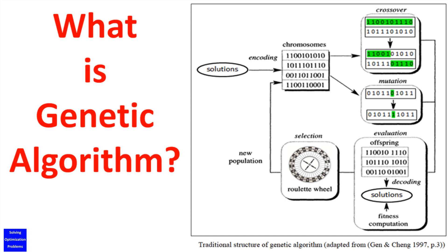Here is a general structure of a genetic algorithm. Genetic algorithm is a popular meta-heuristic, or stochastic optimization algorithm, based on the mechanisms of natural selection in Charles Darwin's theory of natural evolution. Genetic algorithm was first introduced by Holland in 1975, and now it is still very popular in various research communities. Genetic algorithm starts with an initial set of random solutions, which is called population.